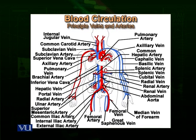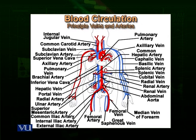Just below the heart, the dorsal aorta gives a branch to the liver called the hepatic artery — hepatic meaning related to liver. Further down, it gives an artery to the kidneys called the renal artery — renal meaning related to kidney. Slightly lower is the gonadal artery going towards the gonads. Going further down, there is the celiac artery, which divides into more branches, and the mesenteric artery. These arteries supply blood to the digestive system organs — the intestines, stomach — and to the mesenteries, the membranes inside the abdominal cavity.